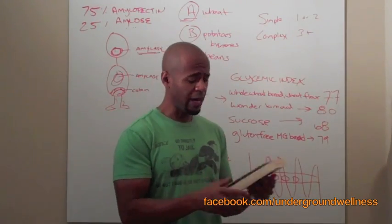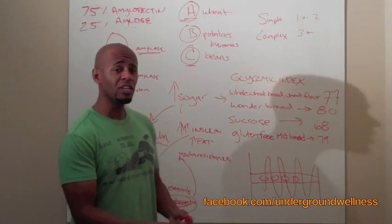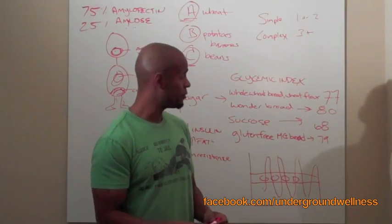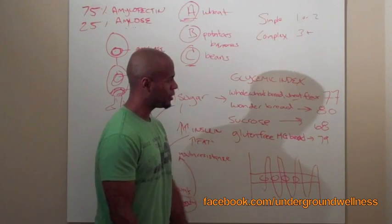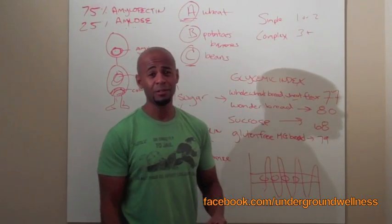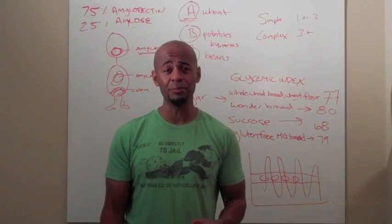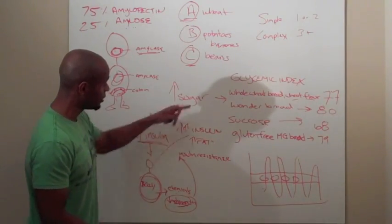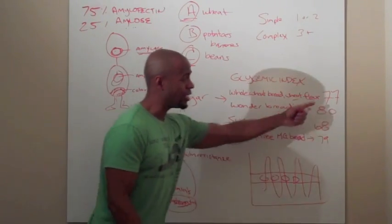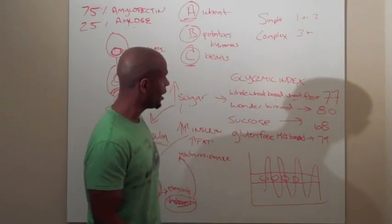I looked up the glycemic index of these different foods. Whole wheat bread from wheat flour. A 77. It's a pretty high glycemic index score. You're really breaking down that amylopectin converting the sugar increase in insulin. That's why you get this high score. It's the amylopectin A. Wonder bread.